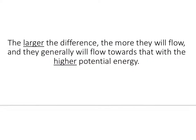So the larger the difference, the more they will flow, meaning the larger their difference in potential energy between those electrodes, the more the electrons will flow. They will generally flow towards that with the higher potential energy, which is why they go anode to cathode. However, you're not always told what's the anode and cathode. Sometimes you're told these are the two things we're reacting together, and you get to figure out which one's going to be the anode and which one's going to be the cathode. So again, they go towards the one with the higher potential energy.